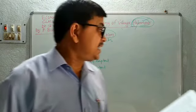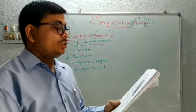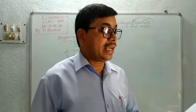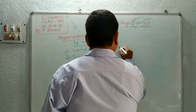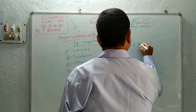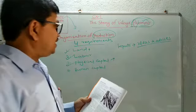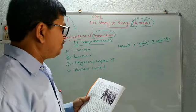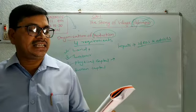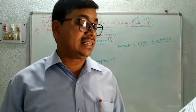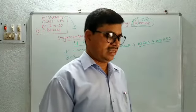The third factor of production is physical capital — the variety of inputs required at every stage during production. Here, inputs means the different ideas, knowledge, and skills required at every stage of production.